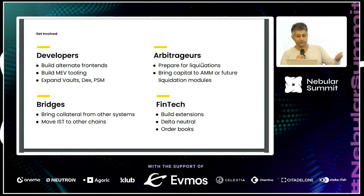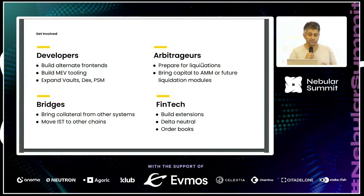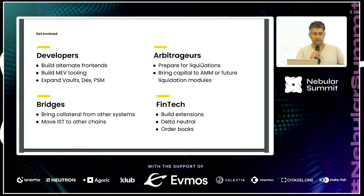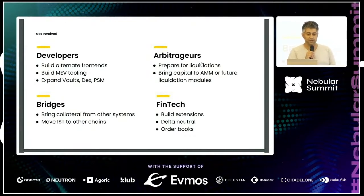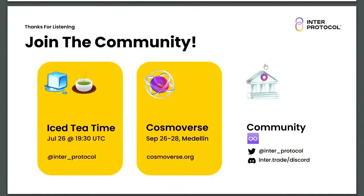All of the code is open source — the parity stability module, the DEX, the vaults. We're looking for contributors. If you're a market maker or a whale, there's going to be a lot of opportunity to participate in the arbitrage system. We have an event called the Economic Stress Test — please reach out — where we'll simulate how the software performs under different volatility conditions. We're looking for bridges to participate in our collateral onboarding process and to move IST beyond the IBC ecosystem.